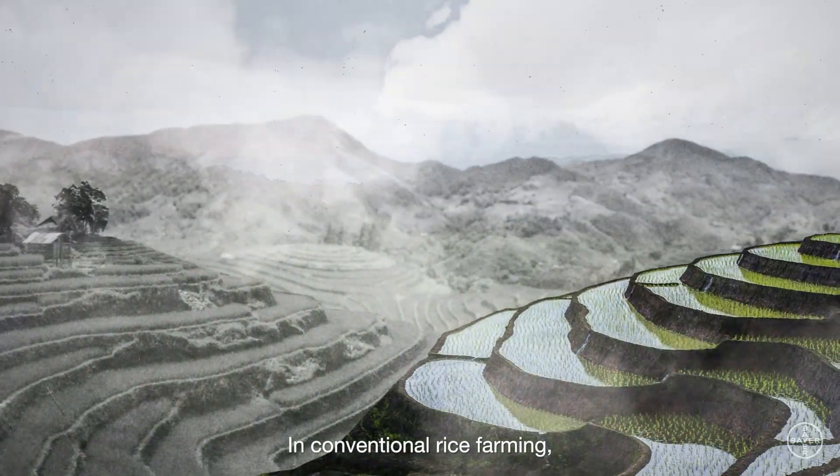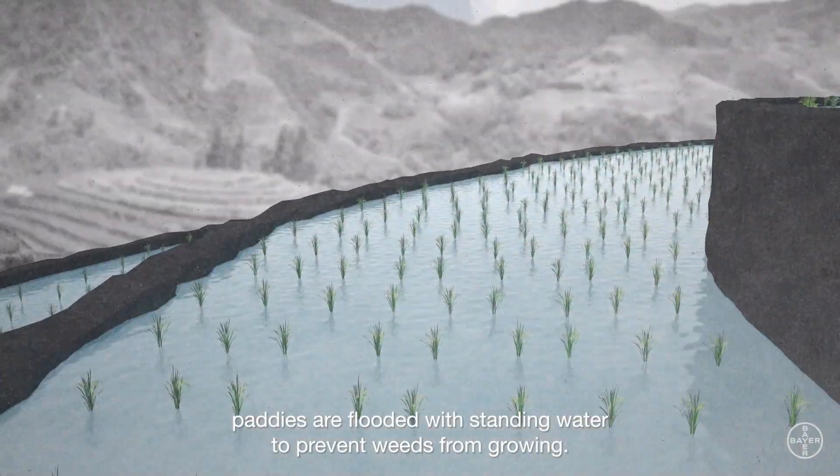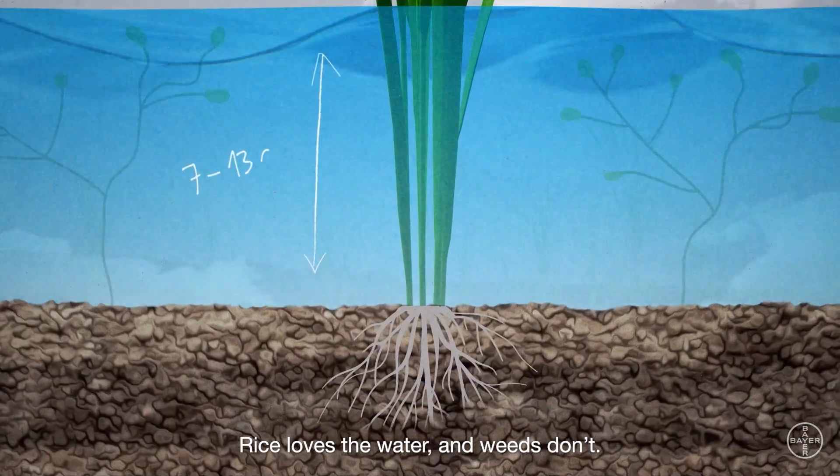In conventional rice farming, paddies are flooded with standing water to prevent weeds from growing. Rice loves the water, and weeds don't.